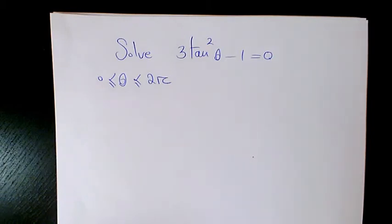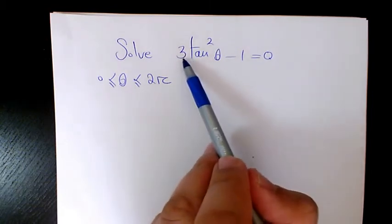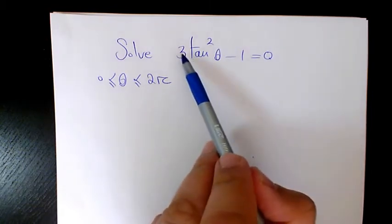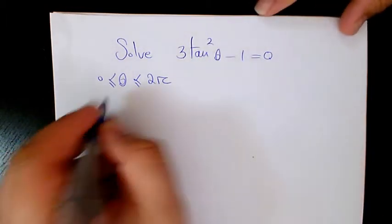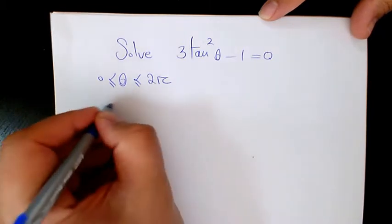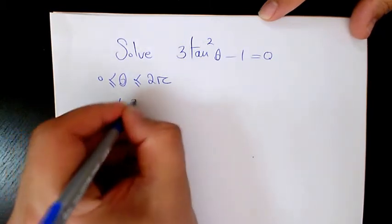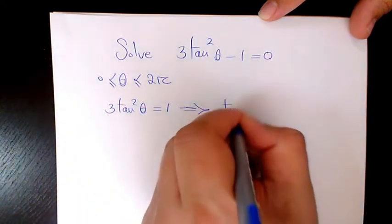What's up guys, this is Mansy. Welcome to another video. In this video I want to show you how to solve a trigonometric equation. We have this equation today: 3 tan squared theta minus 1 equals 0, when theta is between 0 and 2 pi. I'm going to say 3 tan squared theta equals 1, so tan squared theta equals 1 over 3.